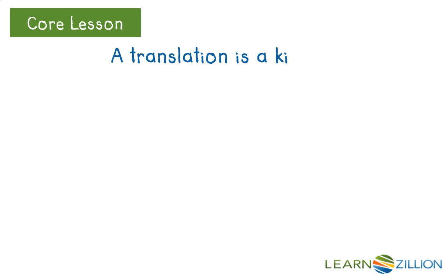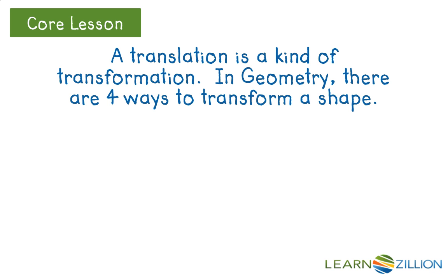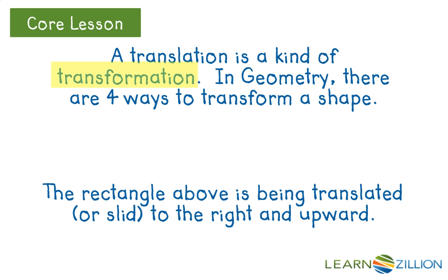A translation is a kind of transformation. In geometry, there are four ways to transform a shape. Translating is one such way. The rectangle you're about to see is going to be translated, or slid, to the right and upward. When you hear the word translate, think slide.